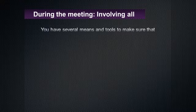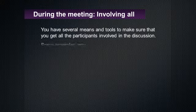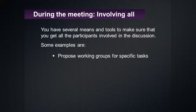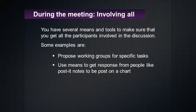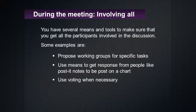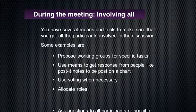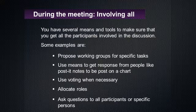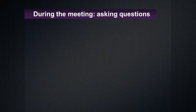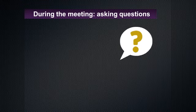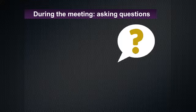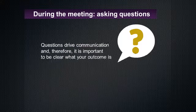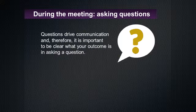You have several means and tools to make sure that you get all the participants involved in the discussion. Some examples are: proposing working groups for specific tasks, using a means to get a response from people such as post-it notes to be posted on a chart, using voting when necessary, allocating roles, and asking questions to all participants or specific persons. You can ask questions to ensure involvement, however you need to be careful — questions drive communication, so it's important to be clear about your intended outcome when asking a question.